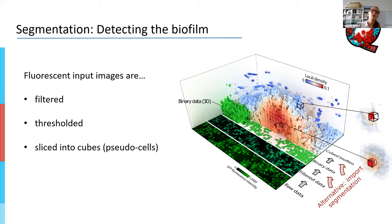Often people use single cells as the spatial context — if they have single-cell resolution, they can say what are the properties of this particular cell in the biofilm. But we don't always have that. A lot of the images I showed didn't have single-cell resolution. You don't always have it, you don't always need it. That's why instead of going for that, we went for this cube approach. Now that we have our structure sliced into cubes, we treat each of those cubes as a pseudo-cell, and for each cube we calculate all the properties that we want. The position of the cube gives us the spatial context we need.